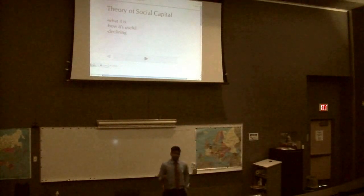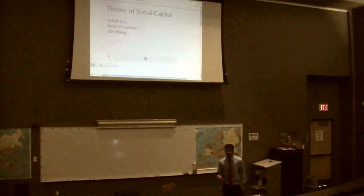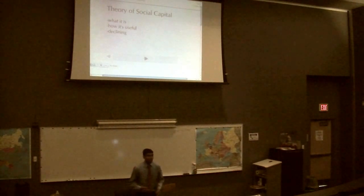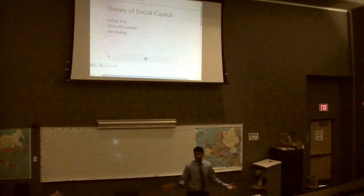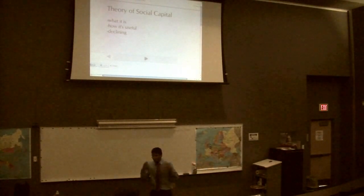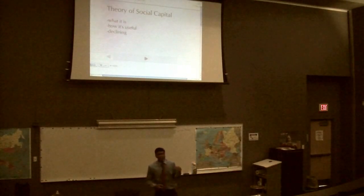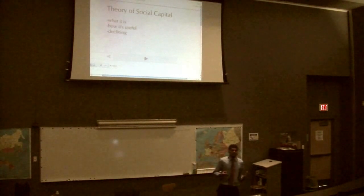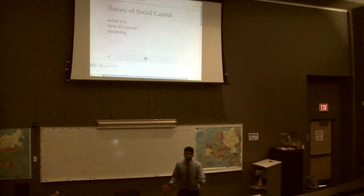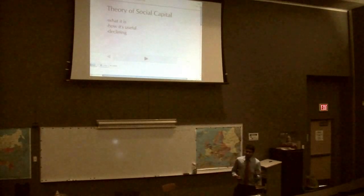The first topic is the theory of social capital. In the research paper, I talk about what social capital is, how it's useful, and that it's declining. We have three types of capital. First is physical capital — assets in the real world. Second is human capital — knowledge that we use to become smart and apply in real-world situations. Third is social capital: the connections, the physical and human connections we have with different people to get a better job or find opportunities elsewhere. We use social capital to generate wealth in our life.